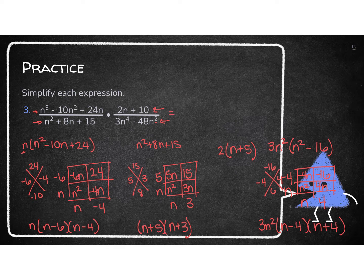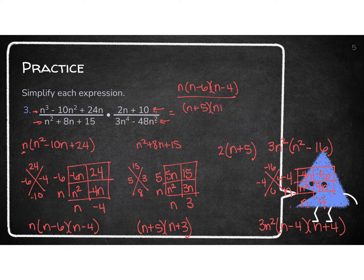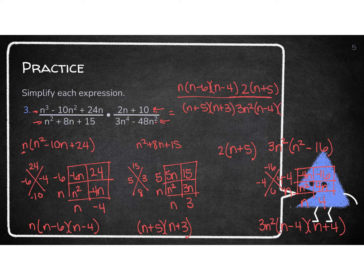Now I write everything where it belongs. Multiplying means I make this one giant fraction. Top: N(N minus 6)(N minus 4) from the first fraction, and 2(N plus 5) from the second fraction. Bottom: (N plus 5)(N plus 3) from the first fraction, and 3N²(N minus 4)(N plus 4) from the second fraction. We still need to find EVs and simplify.